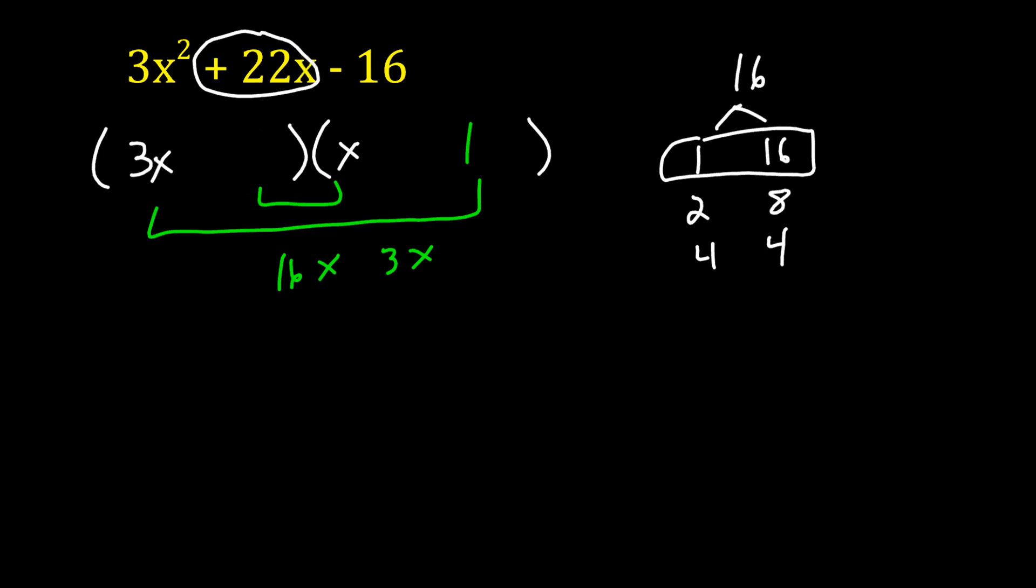So it's not 16 and 1. We can kind of eliminate that one. Let's try the next one. Let's try 2 and 8. So let's put a 2 here and an 8 there. Let's see if that works. 2 times x is 2x. 3x times 8 is 24x.